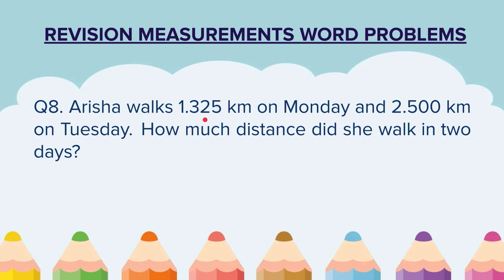Question 8. Arisha walks 1.325 km on Monday and 2.500 km on Tuesday. How much distance did she walk in 2 days? They have told us the distance Arisha walks on Monday and on Tuesday, and we have to find the total distance she walks in 2 days.